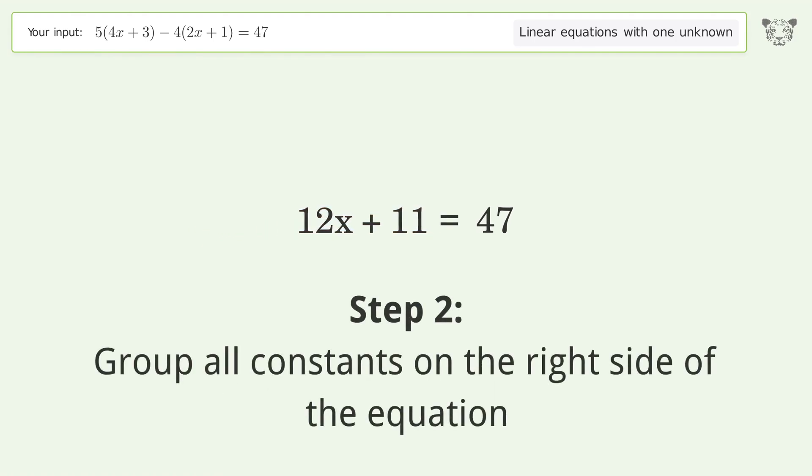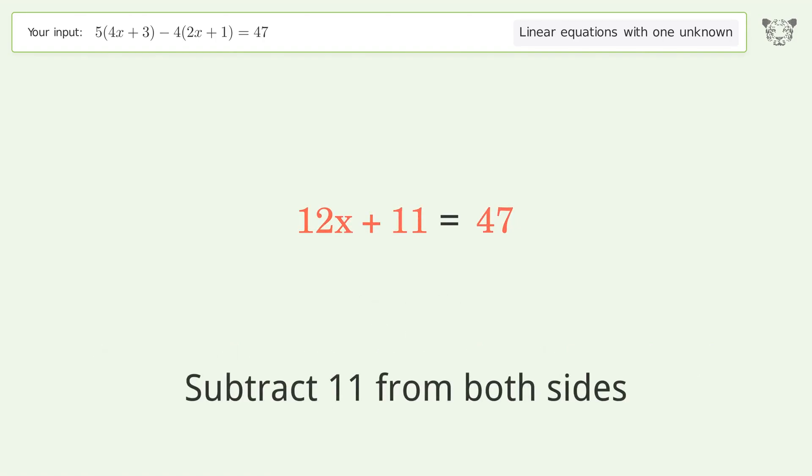Step 2: Group all constants on the right side of the equation. Subtract 11 from both sides.